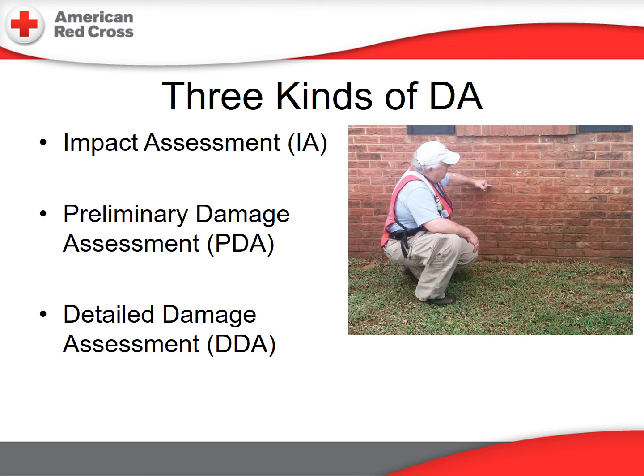There are three primary kinds of disaster assessments. Since this is an abbreviated course, we are only going to briefly mention the first two, and will spend the majority of our time discussing the Detailed Damage Assessment, or DDA, as this will normally be your assignment. An impact assessment is normally done by gathering and analyzing information at the very beginning of an operation — this may include demographic, political, or geographical information — and it normally does not involve a DA team.